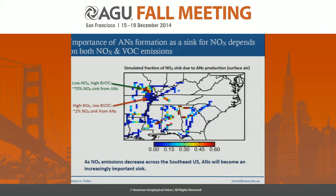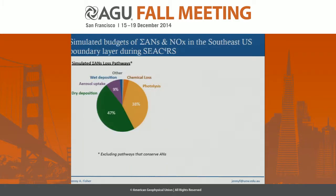Question from Paul: In the pie chart of alkyl nitrate loss, does the aerosol uptake term include aerosol-phase deposition? Response: That pie chart shows only loss of gas-phase species. The aerosol phase is also being deposited separately. In the current model, once taken up to the aerosol it's never converted back — it's an irreversible process. The hope is to use AMS data and Joel Thornton's data to build a more realistic uptake term.